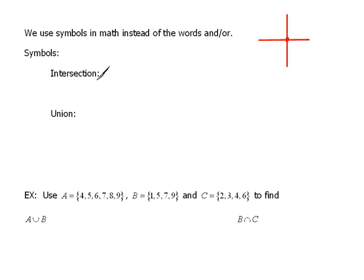So, the intersection really means AND, and the symbol for it looks like this. It's like an upside-down U symbol.